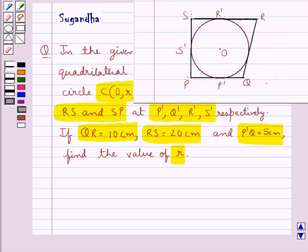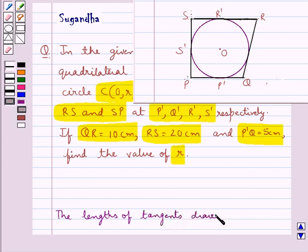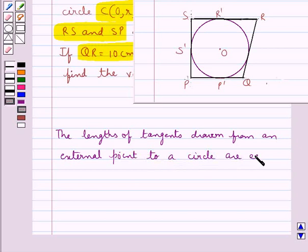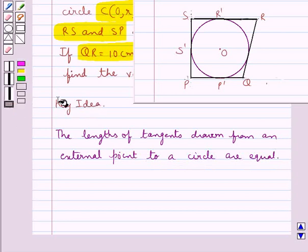Before moving on to the solution, let's recall one fact which says that the lengths of tangents drawn from an external point to a circle are equal. This is the key idea that we use in this question.